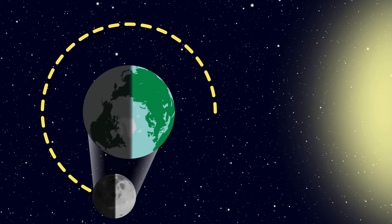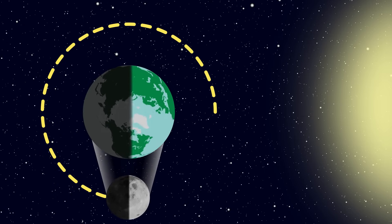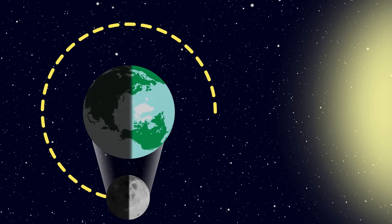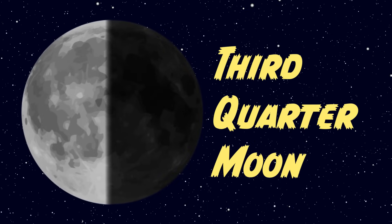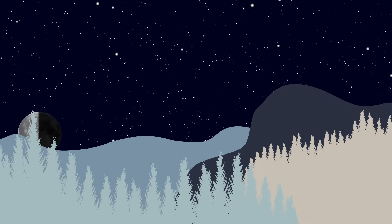After progressing through the waning gibbous moon, the moon is again at 90 degrees off to one side of the Earth, this time on the other side. This is called the third quarter moon, because the moon is three quarters of the way through its orbit. The third quarter moon rises at midnight and sets at noon.